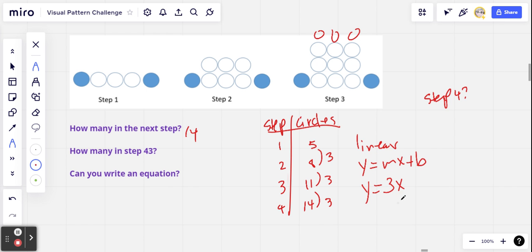So y equals 3 times x, and then the plus b is what we have to add to make it work out with what's really here in the pattern. And in step 1, if we just had y equals 3 times x, and we put in step number 1 for x, 3 times 1 would be 3.